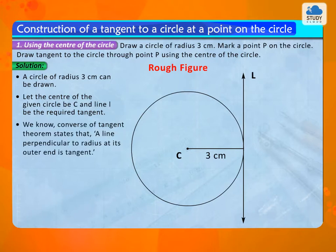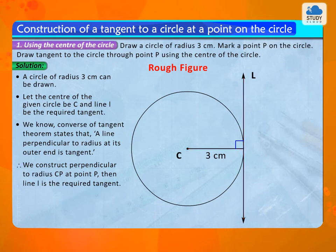We know the converse of tangent theorem states that a line perpendicular to radius at its outer end is tangent. Therefore, we construct perpendicular to radius CP at point P, then line L is the required tangent.